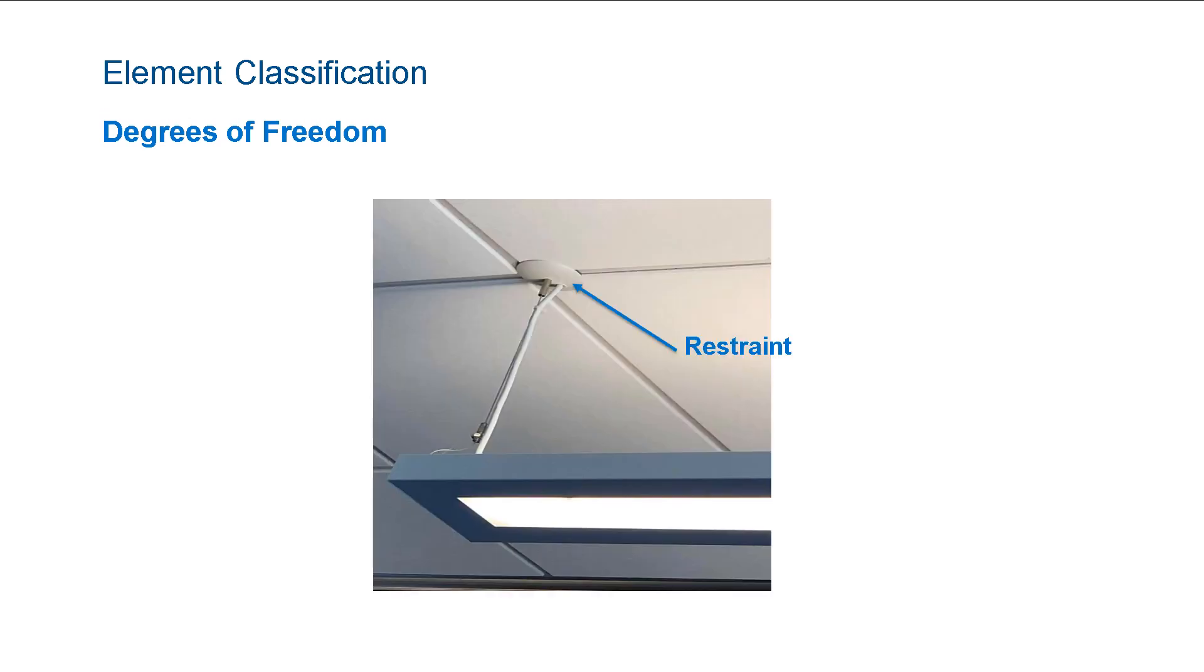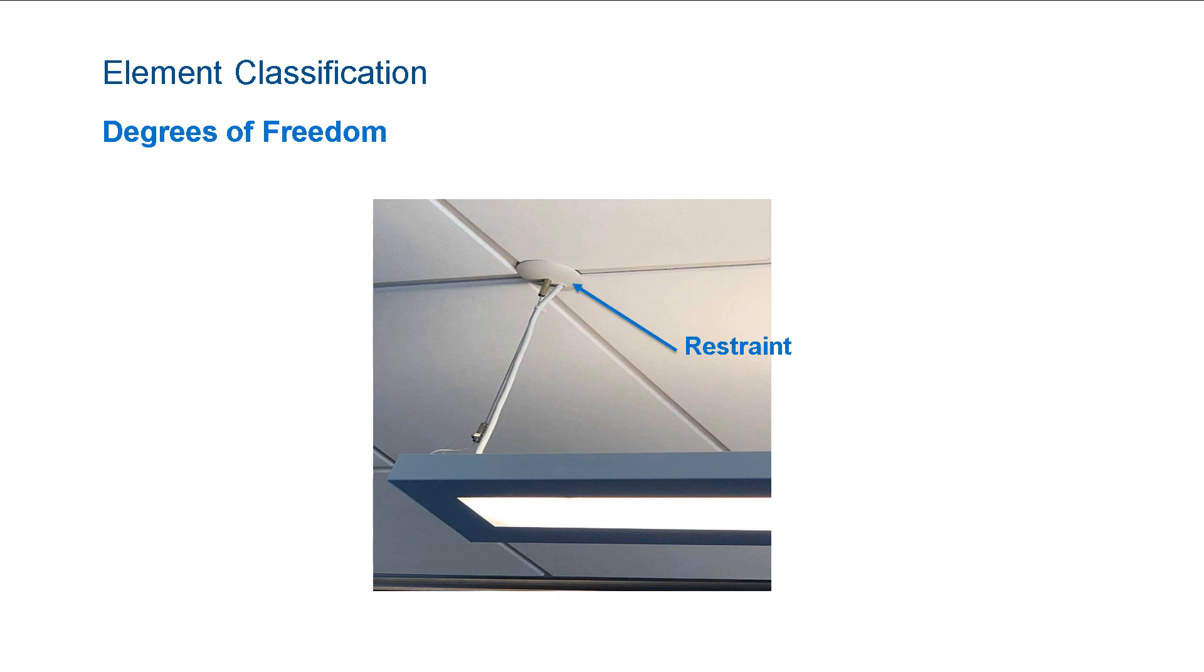In the intro to FEA video, we introduced you to restraints. An example of a place where we are holding an object is the way this light is being held fixed at the ceiling. We will introduce you to some basic types of restraints for the continuum and shell element families in future videos.